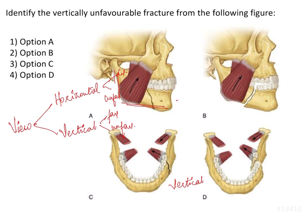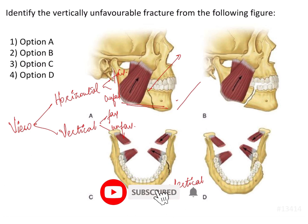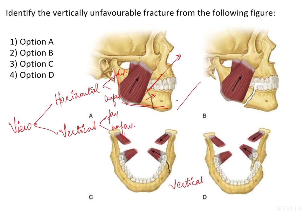Since both muscles are involved in closing the mandible, they pull it upwards. If the fracture line is also in the direction of the pull of the muscles, the fragments can very easily separate and it will be very difficult to reduce them. In such cases, we will have to do an open reduction.